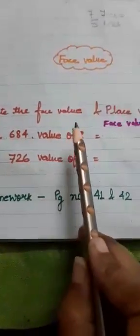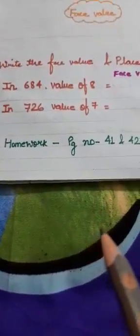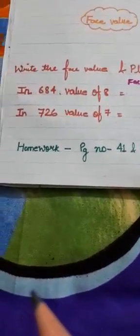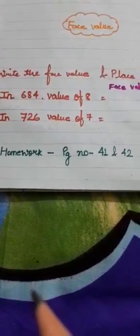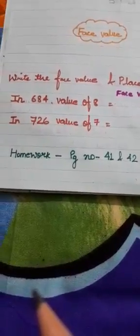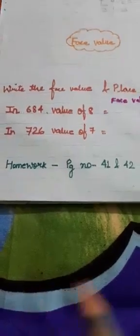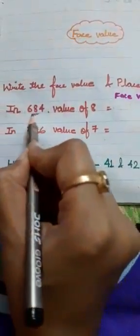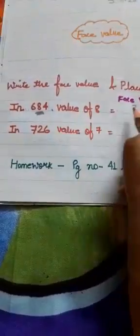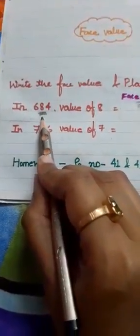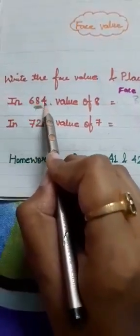Let us solve. Write the face value and place value of digit eight in six hundred eighty-four. The face value of digit eight means the digit itself, so we write eight. For the place value of digit eight — eight is in the tens place, so we write eighty.